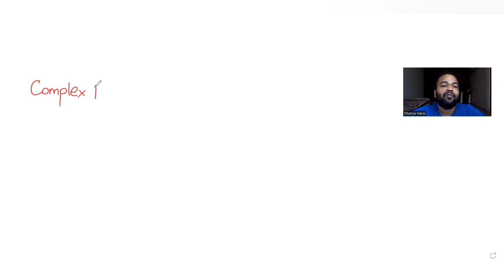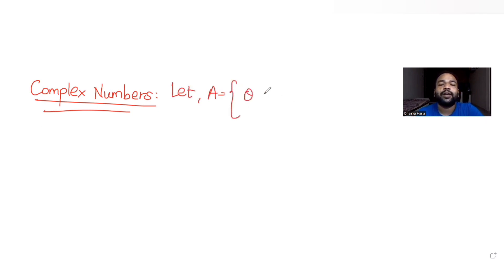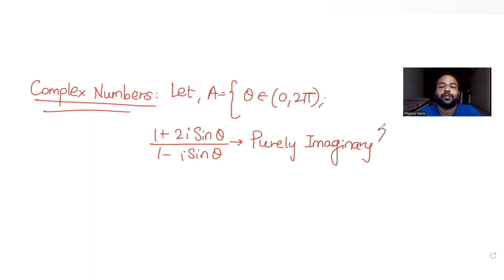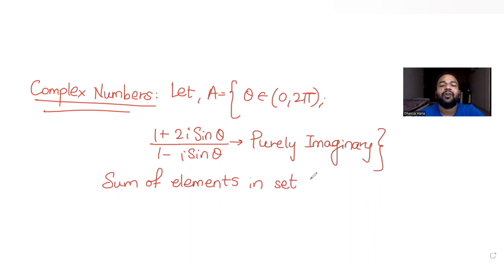Today's question is from the topic of complex numbers. The question tells us: let A be a set where theta belongs to 0 to 2pi. The expression (1 + 2i·sinθ) / (1 − i·sinθ) is given to us as purely imaginary — meaning there is no real part. We need to find the sum of all elements of set A, and we have been given four options.